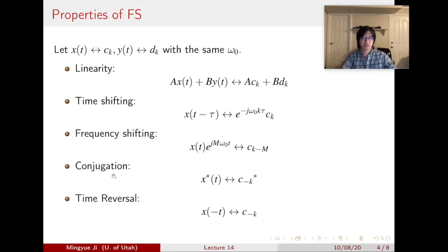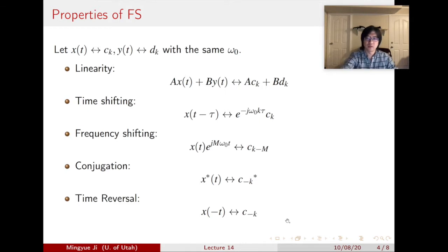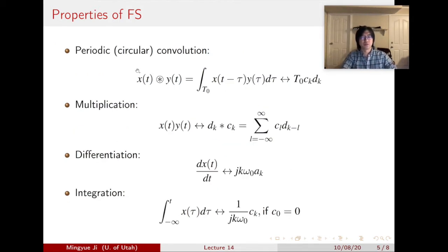The conjugation property says that if we take the conjugate of the time domain signal, we apply negative k and take the conjugate of the frequency domain signal. The time reversal property says that if we do a time reversal on the time domain signal, we do a frequency reversal on the frequency domain signal.